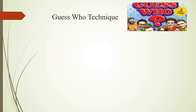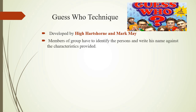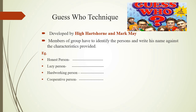Next method: Guess Who Technique. This technique was developed by Hartshorne and Mark May. In this technique, members of the group have to identify persons and write their names against the characteristics provided. Example characteristics: honest person, lazy person in a group, hardworking person, cooperative person, selfish person, kind person.